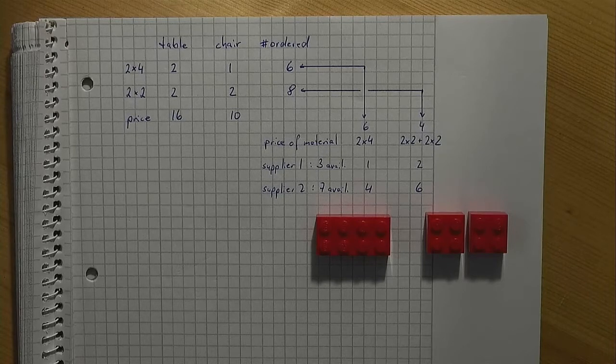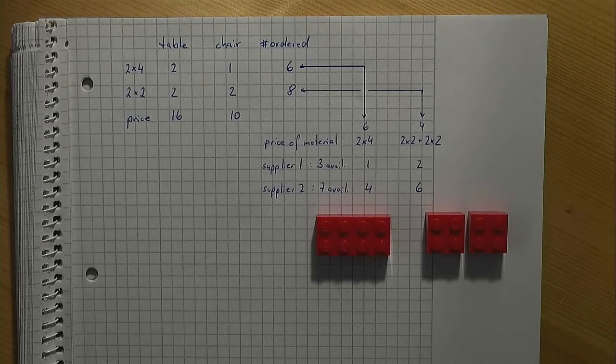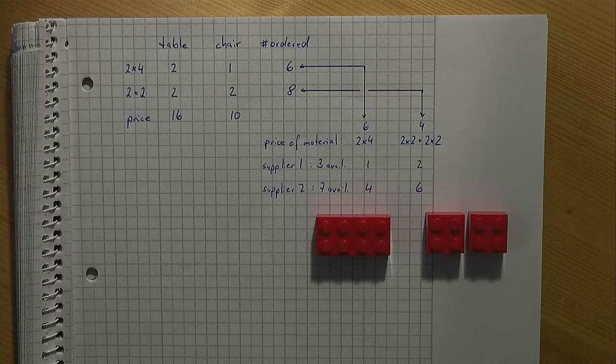One possible model formulation uses x1 and x2 for the number of tables and chairs respectively. In addition,